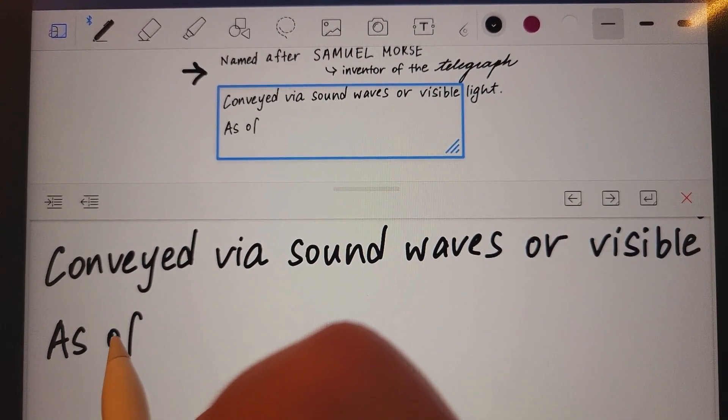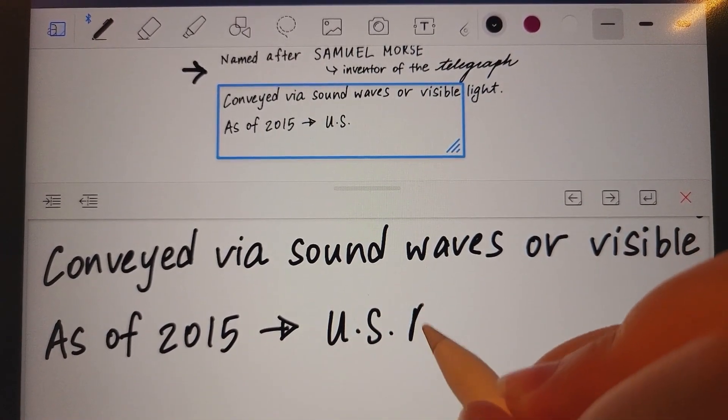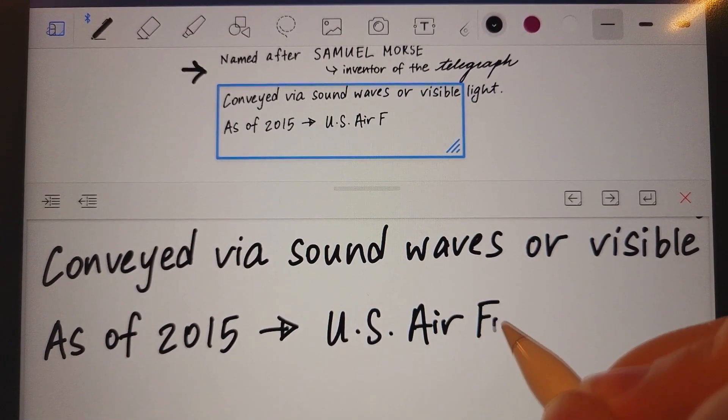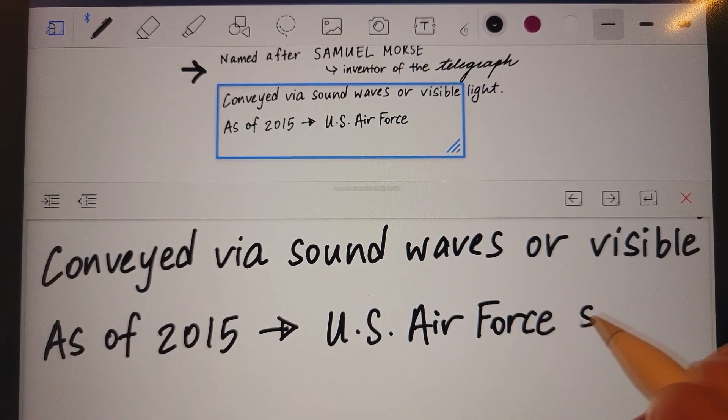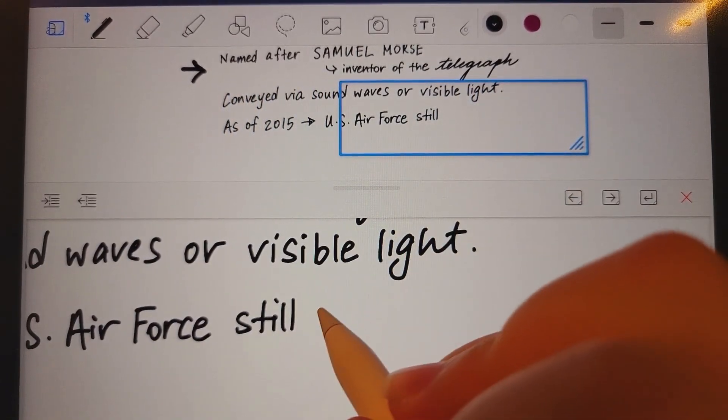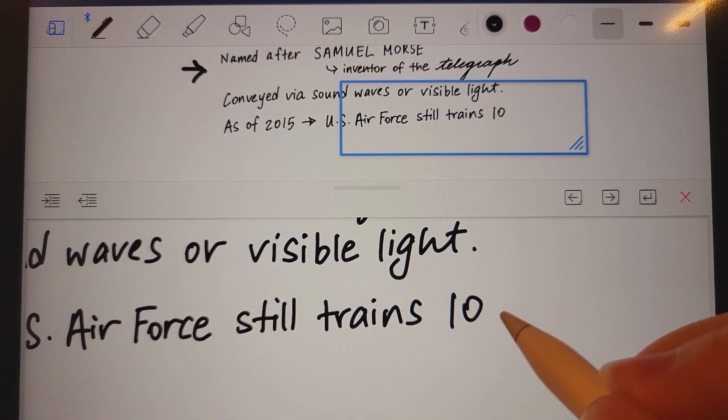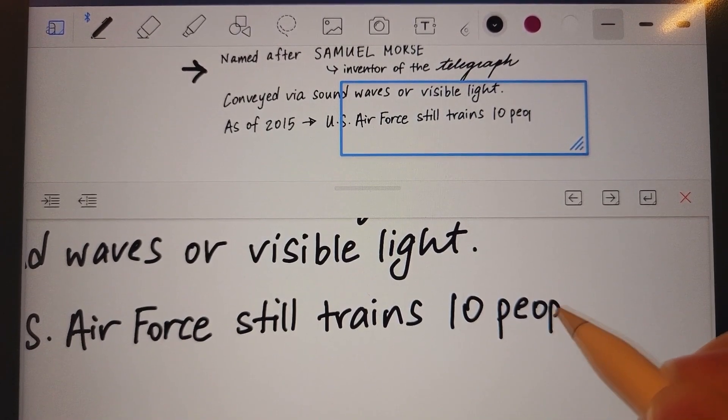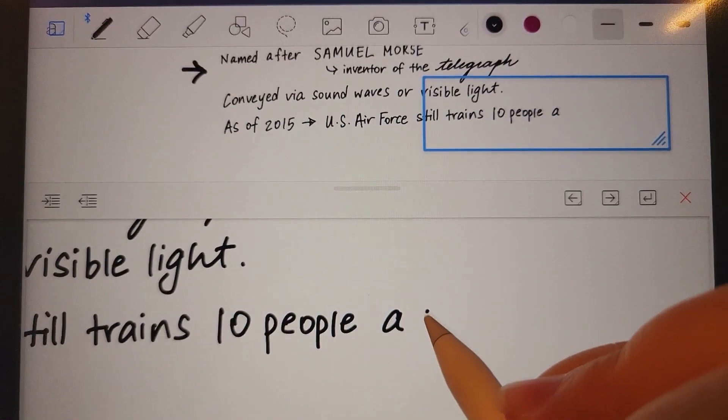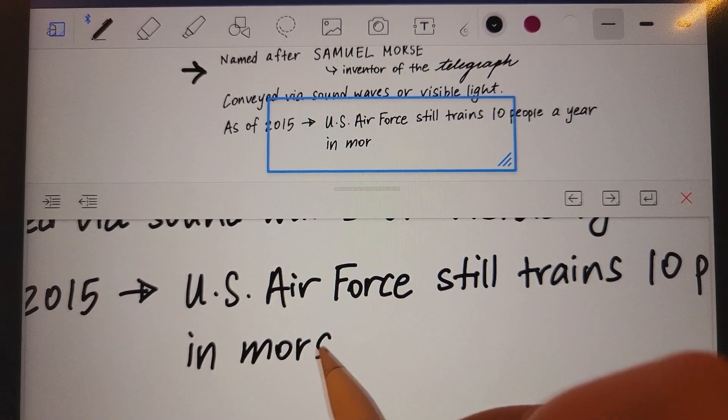Conveyed via sound waves or visible light. As of 2015, U.S. Air Force is still trained, trains ten people a year in Morse.